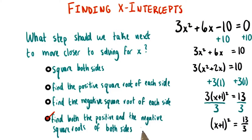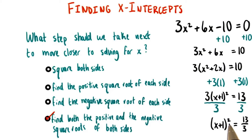The last choice is correct. We need both the positive and the negative square roots. This time we don't have any real life situations ruling out negative numbers. And it makes sense mathematically that if we end up with a negative number inside the parentheses on the left hand side, since we're squaring it, it will equal a positive number.